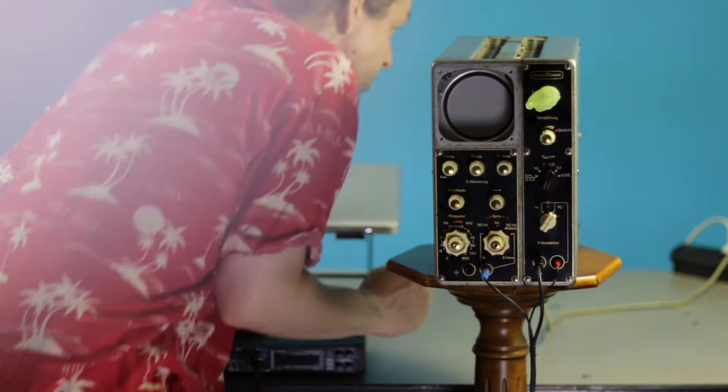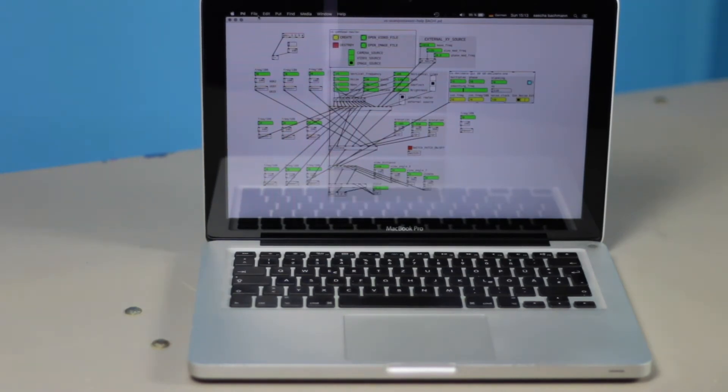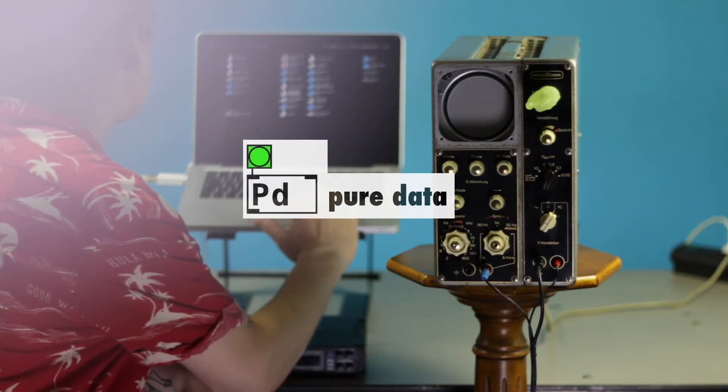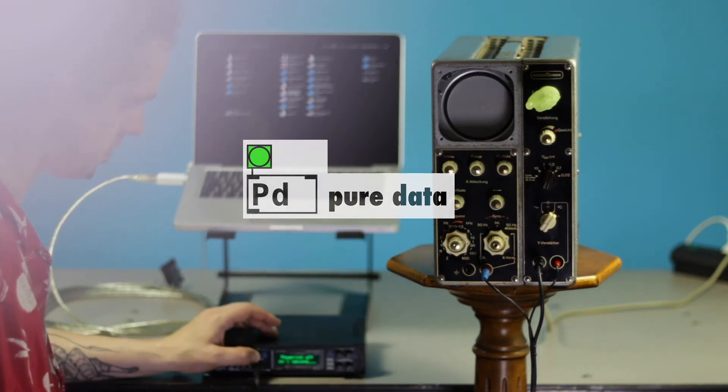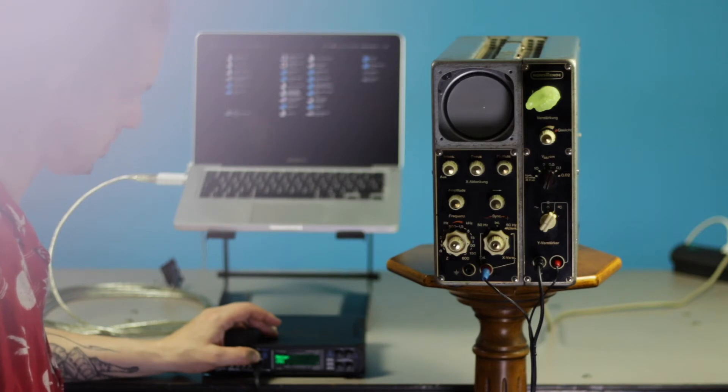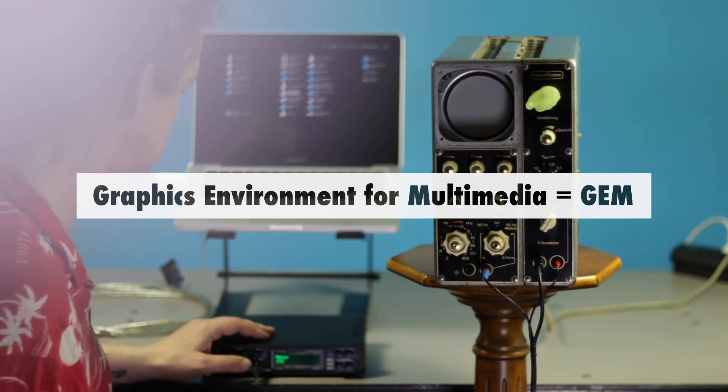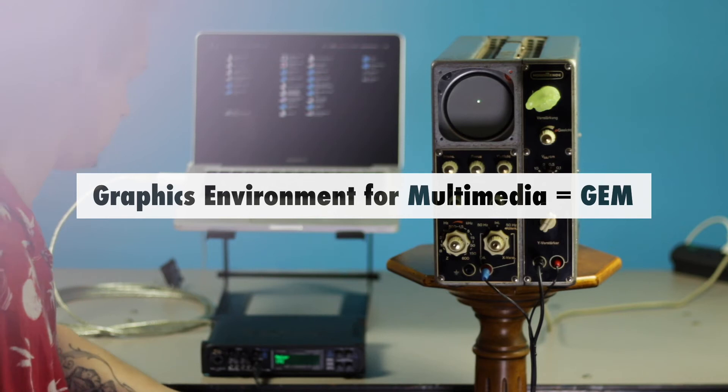We need a computer. This is something I don't want to explain. We need PureData. PureData is a visual programming language developed by Miller Puckette. It is an open source software in which you can create interactive computer music and multimedia works. In addition to creating visuals in PureData you will need GEM. GEM means graphics environment for multimedia. With GEM it is possible to create and manipulate videos or images in real time.